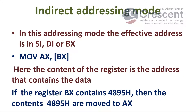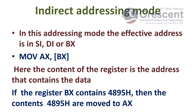In register indirect addressing mode, the effective address is in the source index, destination index, or BX register. For example, MOV AX, [BX] — here the content of the register is the address, and that address contains the data. If register BX contains 4895H, then the content at address 4895H is moved to AX register.